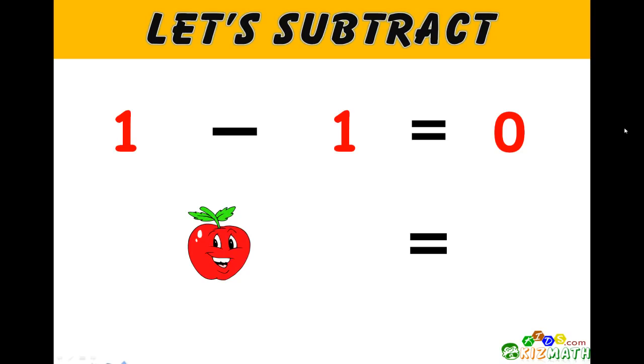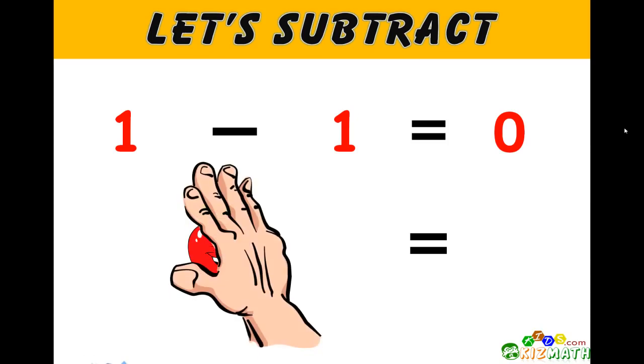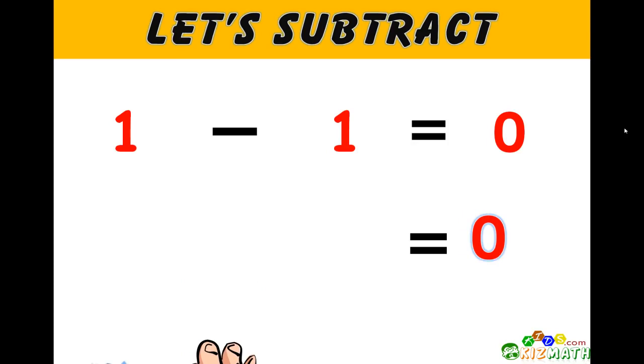Let's subtract. 1 minus 1 equals 0. If we have one apple and we take away that one apple, we have zero apples left.